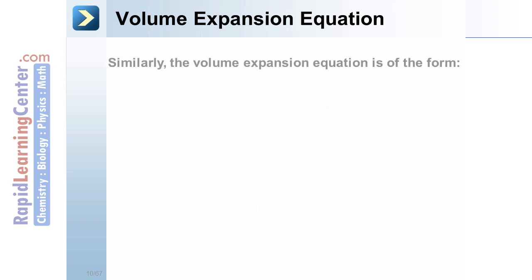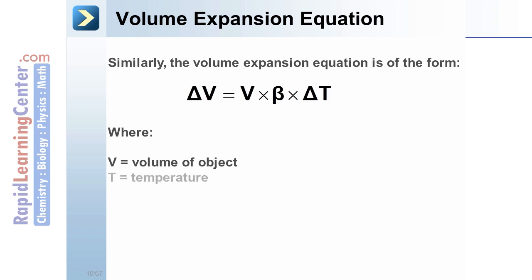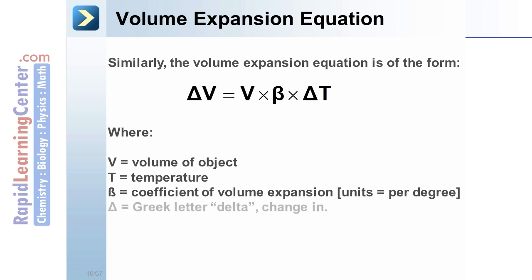Volume expansion equation. Similarly, the volume expansion equation is of the form delta V equals V times beta times delta T, where V is the volume of the object, T is for temperature, beta is a coefficient of volume expansion, which once again has units of per degree, nothing on the top, degrees on the bottom. And once again delta, whether it's delta V or delta T, means change in.